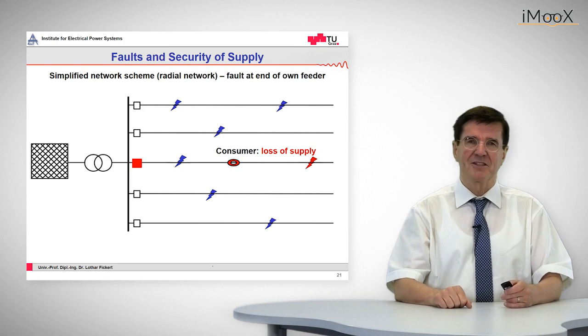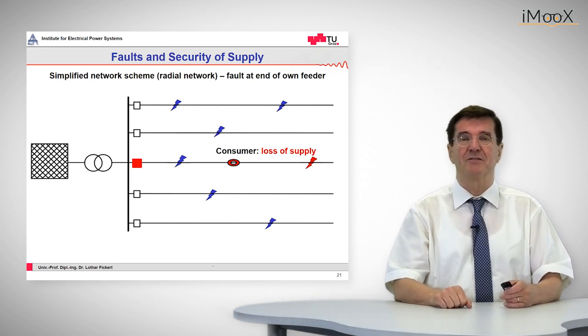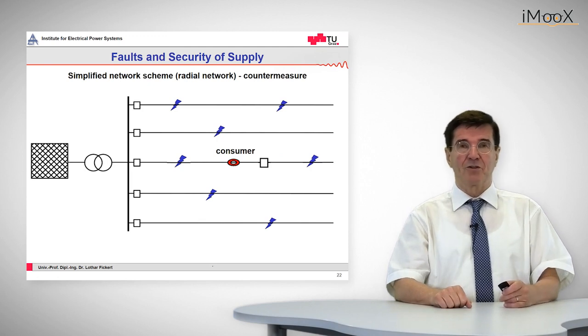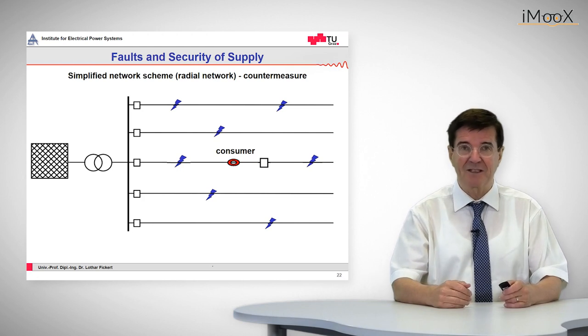If we are not happy with this situation, we should and can take countermeasures by means of additional protection. For example, installing one further protection device, including a circuit breaker downstream of that sensitive consumer.